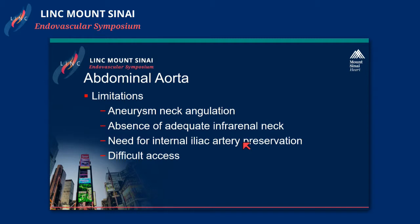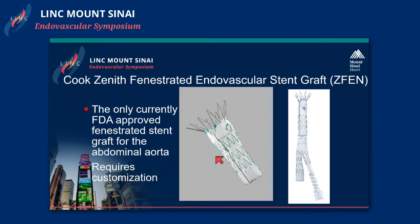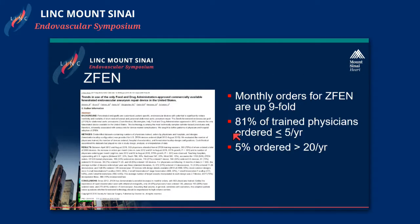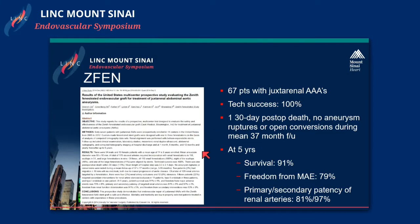In terms of the abdominal aorta, there are several devices — the Anaconda device is meant to handle aortic neck angles of 90 degrees or more. For those with short or no necks, we need to look at what technology is currently available. The Cook fenestrated device is FDA approved for use in the United States. Since its inception, the number of ZFEN devices implanted has gone up dramatically. Five-year data shows 91% survival, 79% freedom from major adverse events, and primary and secondary patencies of 81 to 97% for the fenestrations. The major drawback is that this is a custom device and we need to wait for it.